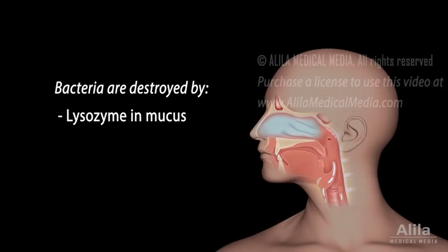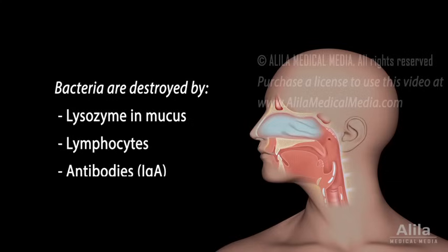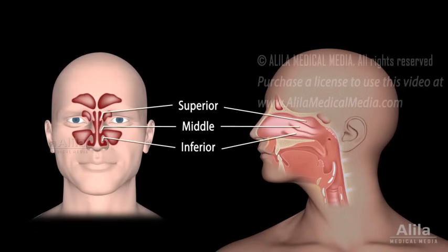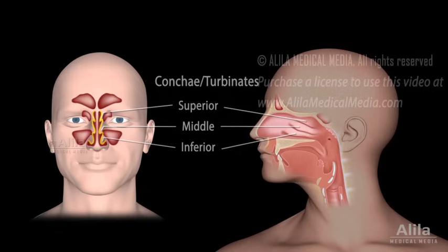Additional protection against potential pathogens is provided by lymphocytes and antibodies. There are three folds of tissue arising from the wall of the nasal cavity called nasal conchae, or turbinates. These structures serve to increase the contact surface with inhaled air, enabling the nose to rapidly warm, moisten, and cleanse it.